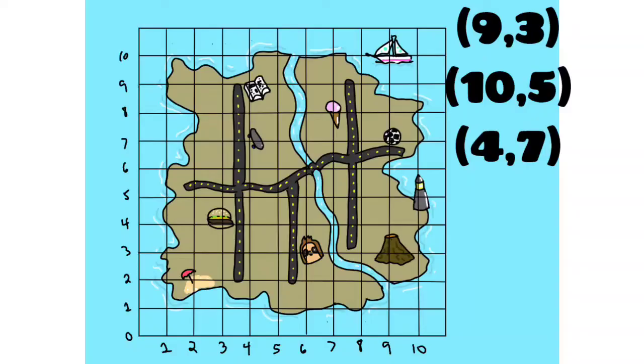Now let's check your work on the other two ordered pairs. So ten, five, starts at the origin, over ten, up five. Yay, you got the lighthouse. Then we can check the four, seven ordered pair. So start at the origin, go over four, up seven, and we're at the skateboard park.